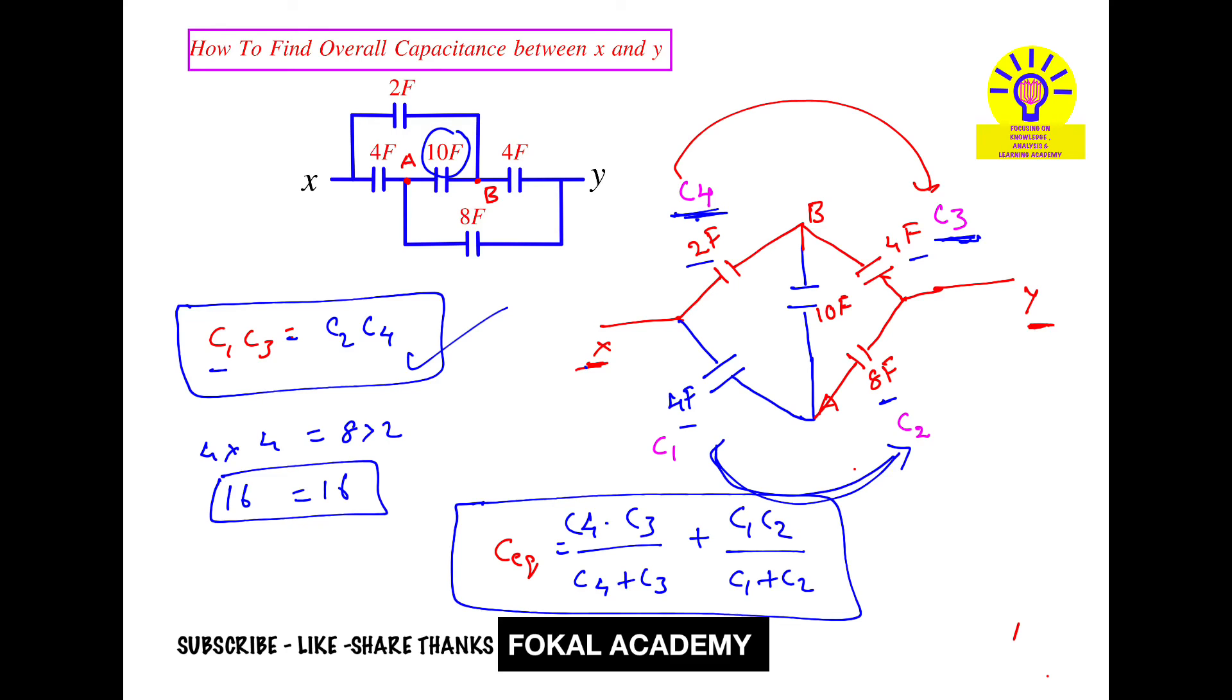Now substitute all the values here. Then we get C4 is 2 and C3 is 4. So 2 into 4 upon 2 plus 4, plus next between these two elements, 4 into 8 upon 4 plus 8.